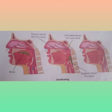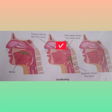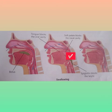When the bolus enters the food pipe, backward movement of the tongue blocks the oral cavity, and the soft palate blocks the nasal cavity. A flexible flap called the epiglottis blocks the windpipe or the larynx so that food can move into the right pipe.